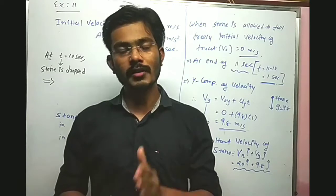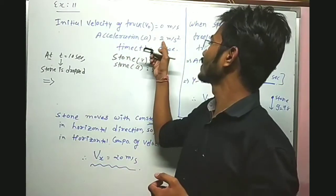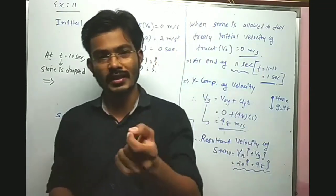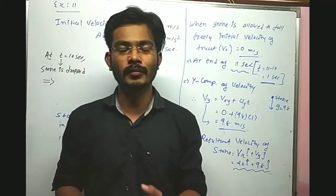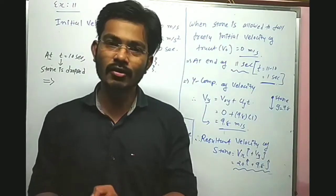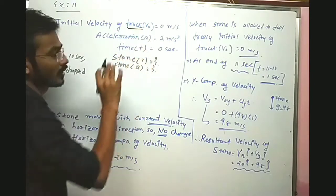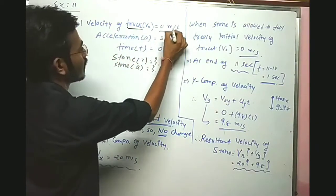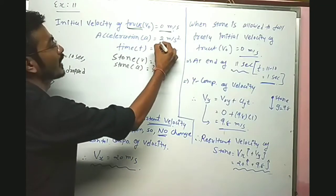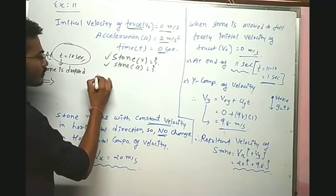So here a truck is moving — first it is at rest, then it accelerates. The acceleration value given is 2 meter per second square, and it is accelerating as it moves. At t equal to 10 second, the stone is dropped. So the given data: initial velocity of truck at rest condition is zero meter per second, acceleration is 2 meter per second square, and initial time is zero second.